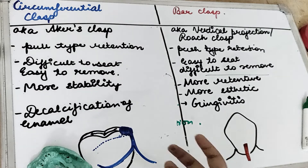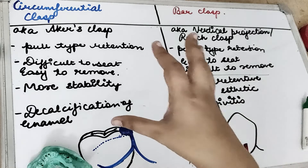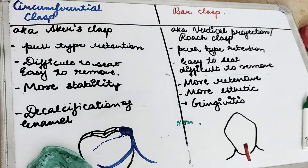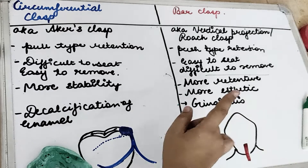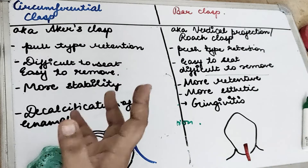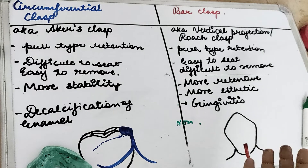Because the bar clasp is difficult to remove, it is more retentive. If we keep all the factors constant for both the circumferential clasp and the bar clasp, then the bar clasp is more retentive as compared to a circumferential clasp. A circumferential clasp, because it is encircling the tooth, provides greater stability but less retention, and the aesthetics are also less compared to the bar clasp.